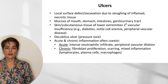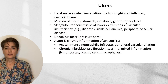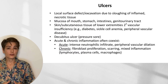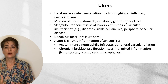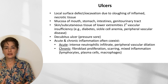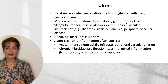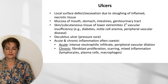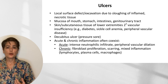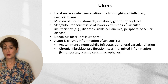This brings us to our last morphologic pattern: ulcers. This is a local surface defect or excavation due to sloughing of inflamed necrotic tissue. We can see this in three different situations: one is the mucosa of the gastrointestinal tract — the mouth, stomach, and intestines — or in the genitourinary tract.